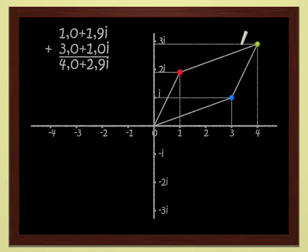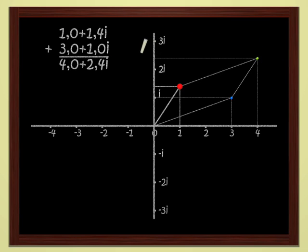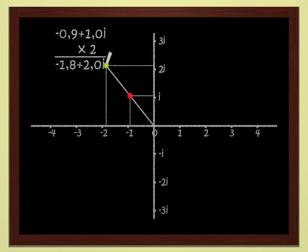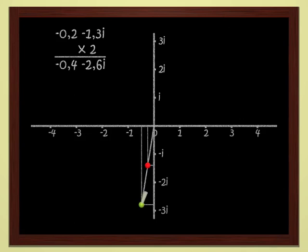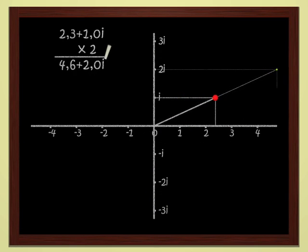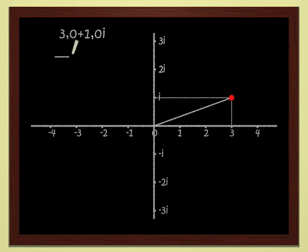Much more interestingly, these complex numbers can also be multiplied, just like real numbers. Let's see. We know how to multiply a complex number by 2, for instance. 2 times 1 plus 2i gives 2 plus 4i. Geometrically, multiplying by 2 is easy. It's just scaling up by a factor of 2. If we double the red point, we get the green point.